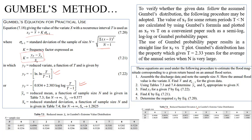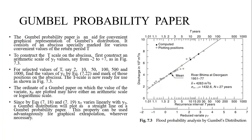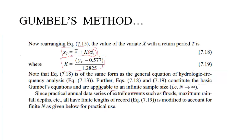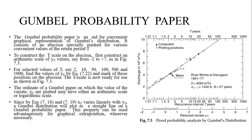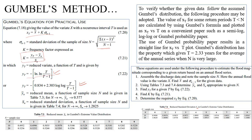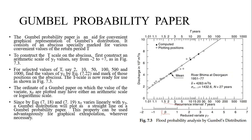On Gumbel probability paper, the x-axis has the reduced variate yT and the y-axis has the discharge. Plotting gives a straight line if the data follows Gumbel distribution. The return period axis is on a logarithmic scale because yT has a logarithmic relationship with return period.